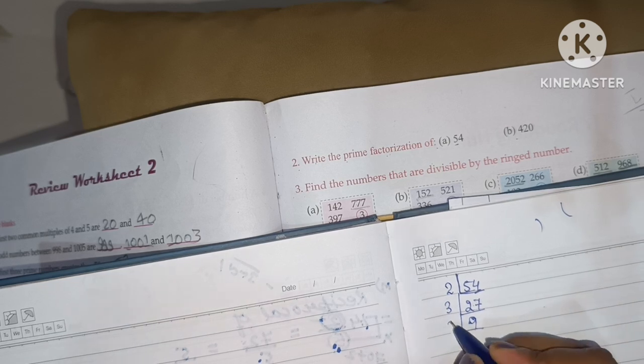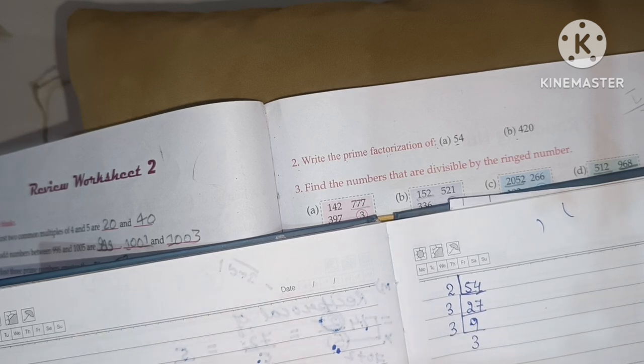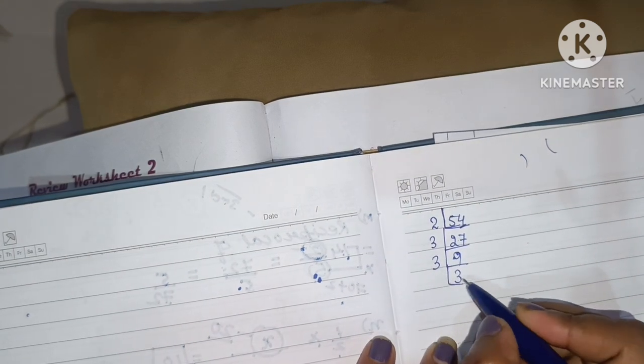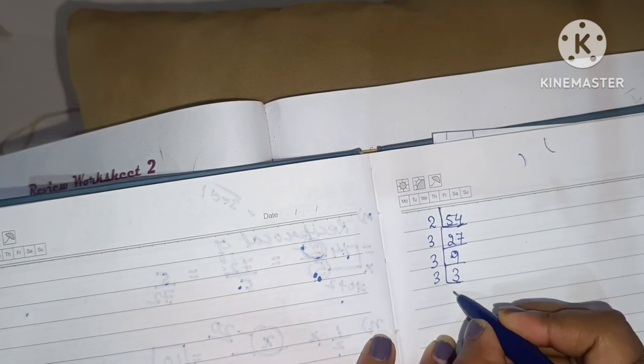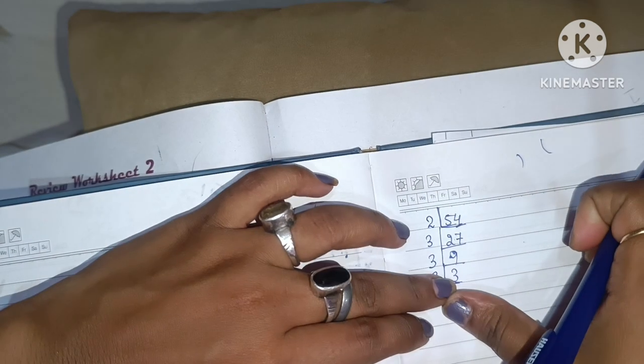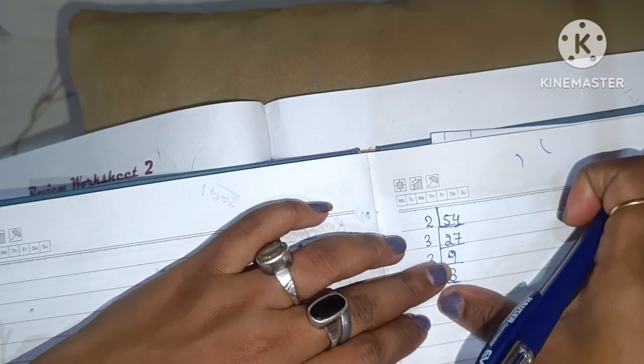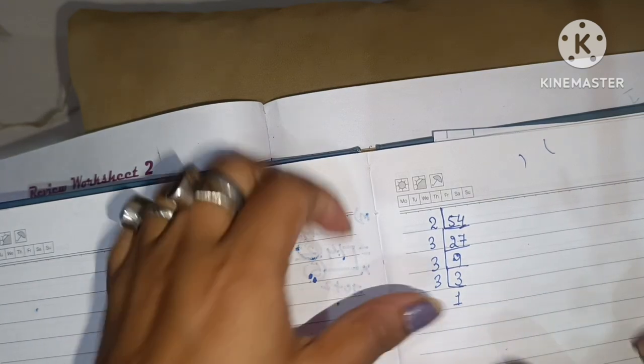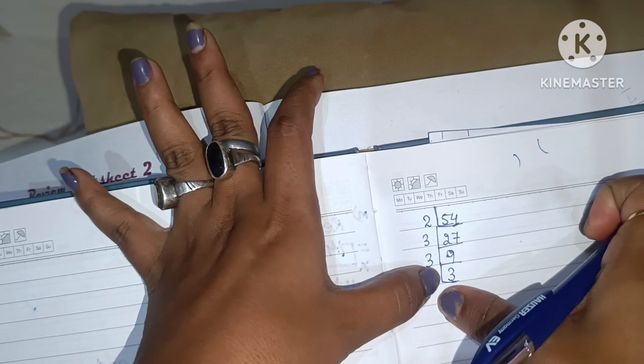9 divided by 3 will be 3. Now, if you want to divide it further, you can divide and write here 1. Otherwise, you can leave it here also. It's your wish. You can leave. Okay?